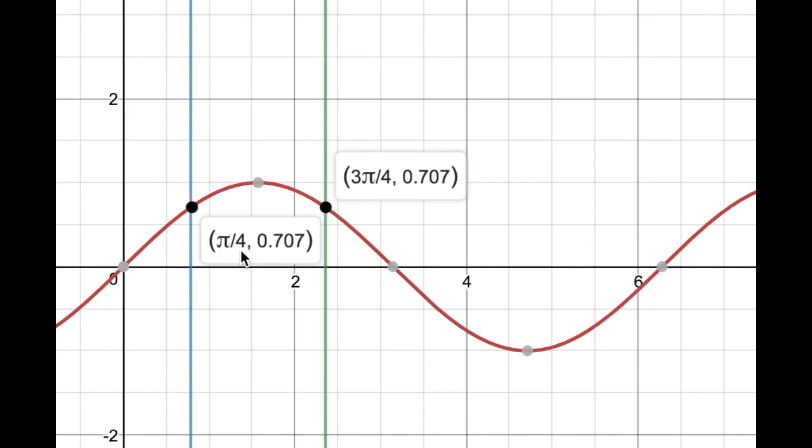These answers are written as fractions of pi, are not rounded, and will give me exactly 1 over root 2.